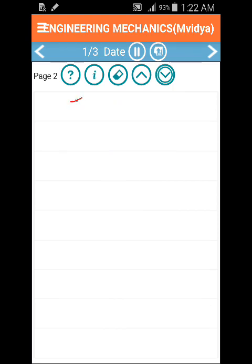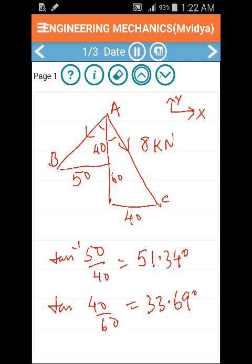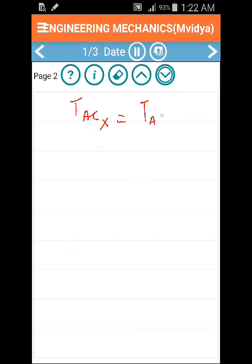The X component of tension AC equals the X component of tension AB, since both are in opposite directions.